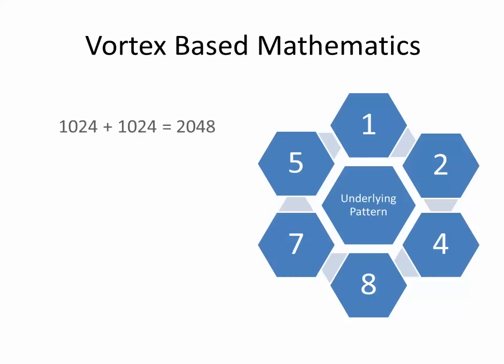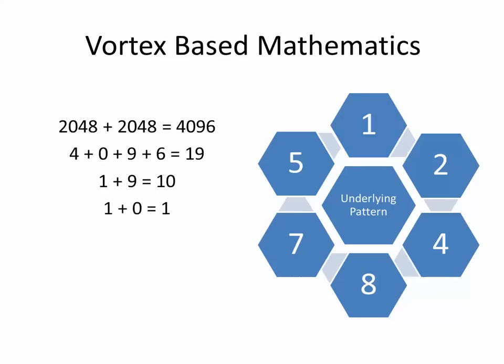1024 plus 1024 equals 2048. 2 plus 0 plus 4 plus 8 equals 14. 1 plus 4 equals 5. 2048 plus 2048 equals 4096. 4 plus 0 plus 9 plus 6 equals 19. 1 plus 9 equals 10. 1 plus 0 equals 1.